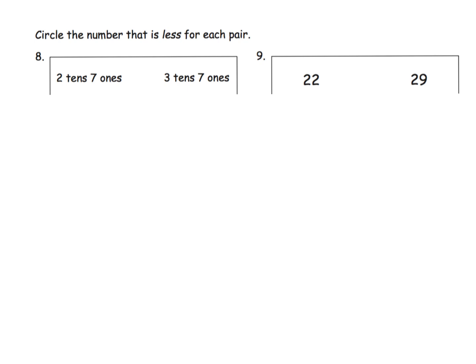And our last slide for this video is that we're supposed to, again, circle the number that is less for each pair. And here we're really going abstract here. So the idea is we've got two tens and seven ones, so we want to think of that as 27. Here we've got three tens and seven ones. And which number is less? We want the 27.